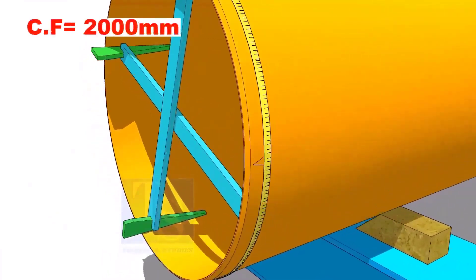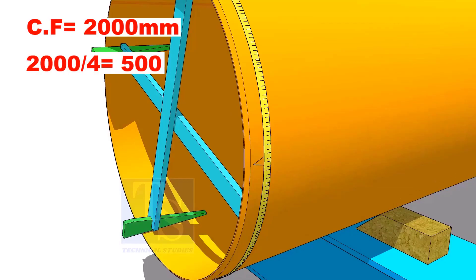Assume that the circumference is 2000 millimeters. Divide it by 4. Now you have the arc length of 90 degrees.